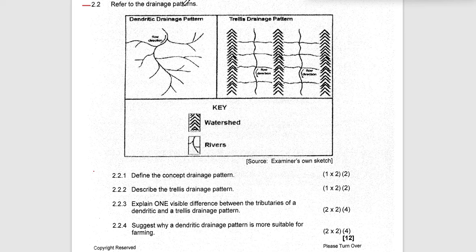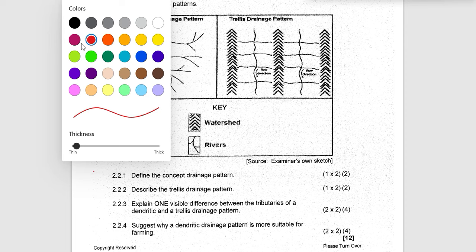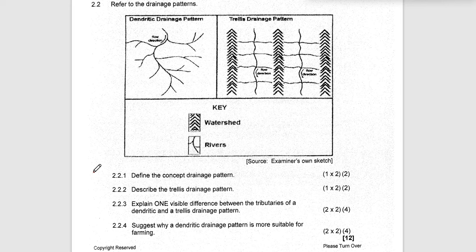Figure 2.2 is showing us drainage patterns — namely we have a dendritic drainage pattern as well as the trellis drainage pattern. We can see there's a difference between these two patterns as their names are different. We're going to be looking at the differences between the dendritic and trellis patterns, understanding the characteristics as well as the advantages of these patterns in terms of farming and other geographical concepts.